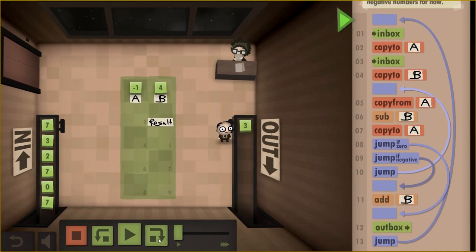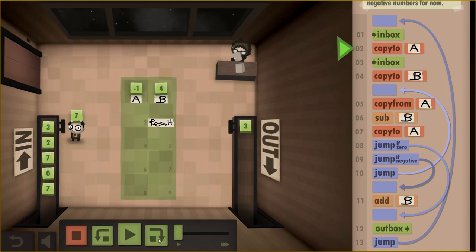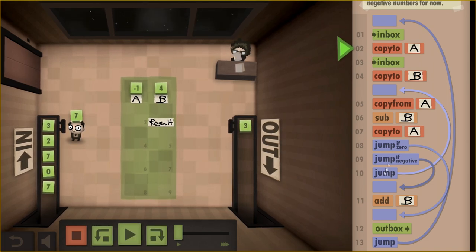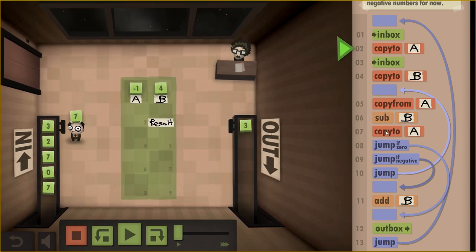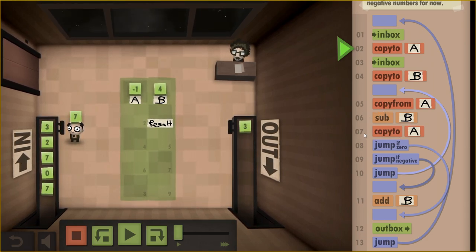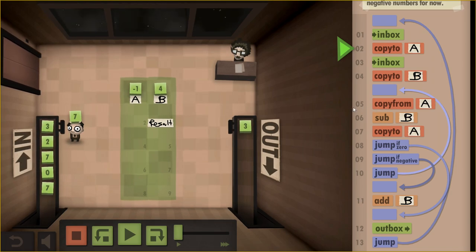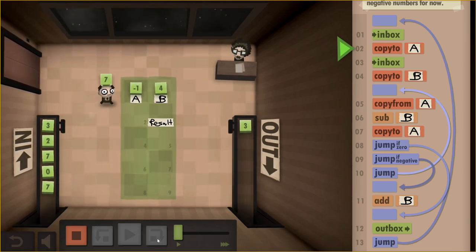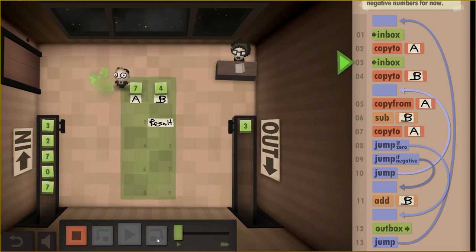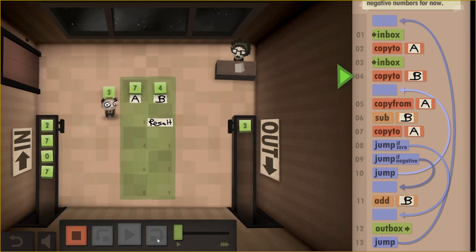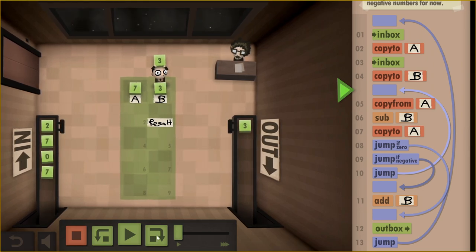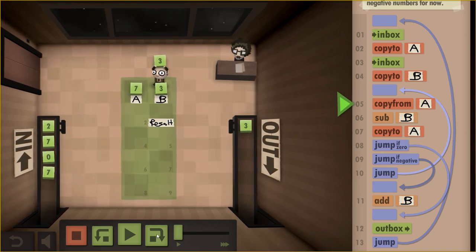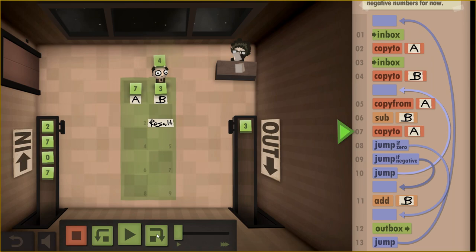Now if it's negative, we need to add back the number that we copied, so we want to add B and then move it to the outbox. And the reason for that is if you had, like in this example, seven and four, you're going to subtract four from it and get three. You're going to subtract four from three and get negative one. Now that's negative, but seven mod four is three because seven divided by four is one remainder three.